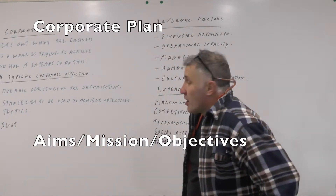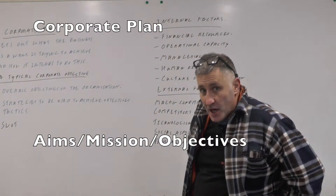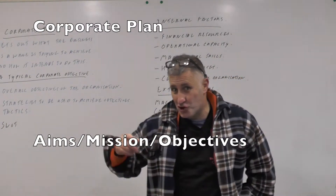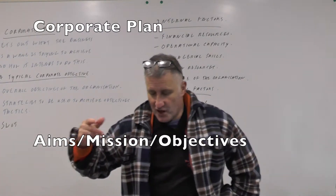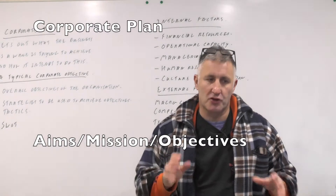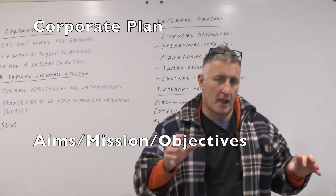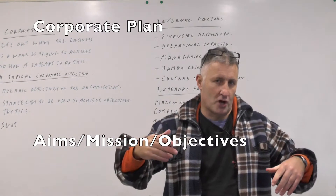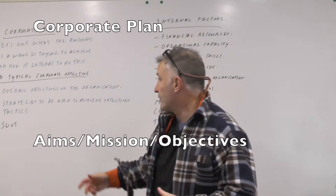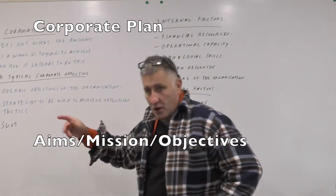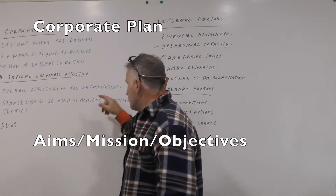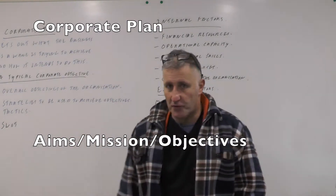Here we're still looking at Lesson 79 and the managing change module, specifically the corporate plan. A corporate plan sets out what a firm wants to do in the future — its aims and objectives. I always like to see it as a business plan. For a firm already in existence, it will contain the overall objectives, the strategies to be used to achieve those objectives, and the firm's tactics, derived from a SWOT analysis.